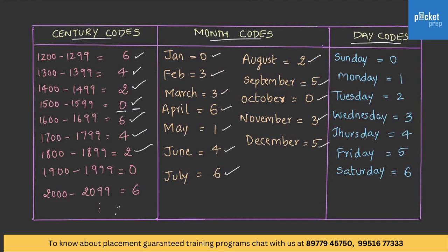For month codes: January is 0 and December is 5. For day codes, it can be easily remembered: Sunday is represented with 0, following the sequence.